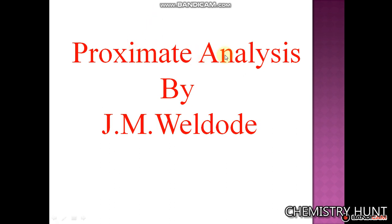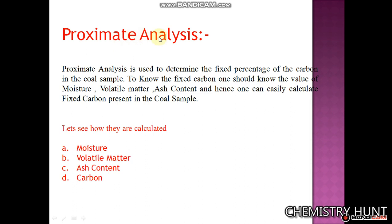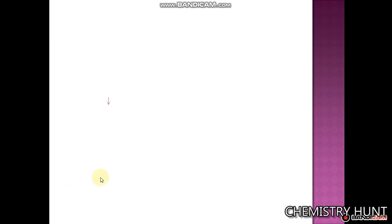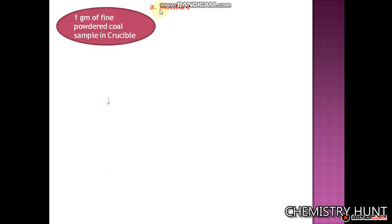Good morning friends. Today we are going to see the proximate analysis. The proximate analysis is used to determine the percentage of fixed carbon in a coal sample. To know the fixed carbon, one should know the value of moisture, volatile matter, and ash content, and hence one can easily calculate the fixed carbon present in the coal sample. Let's see how they are calculated.